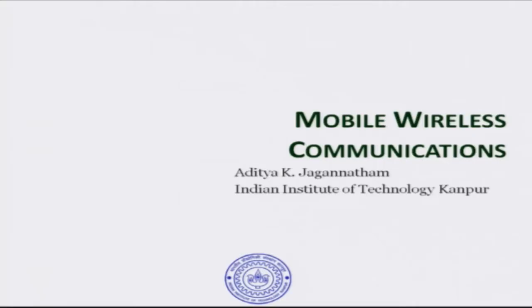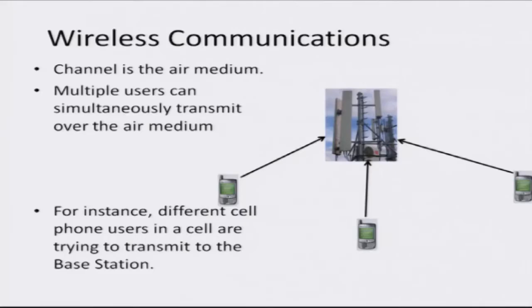Welcome to another module on wireless communications in this massive open online course. In the last module we looked at some of the basic and introductory aspects of wireless communication systems — basically an introduction to the terminology of various standards and some of the salient aspects of the physics of a wireless communication system. What we are going to do now is start looking at the evolution of wireless communication systems through the various generations.